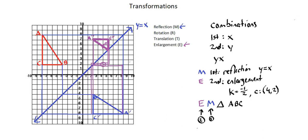As one final comment, note that E of M of triangle ABC does not equal M of E of triangle ABC. In other words, it is important to order the transformations correctly. When you see the notation E of M of an image, that means perform the inner transformation first — in this case M, the reflection — then the outer transformation, E, the enlargement. This concludes transformation combinations.